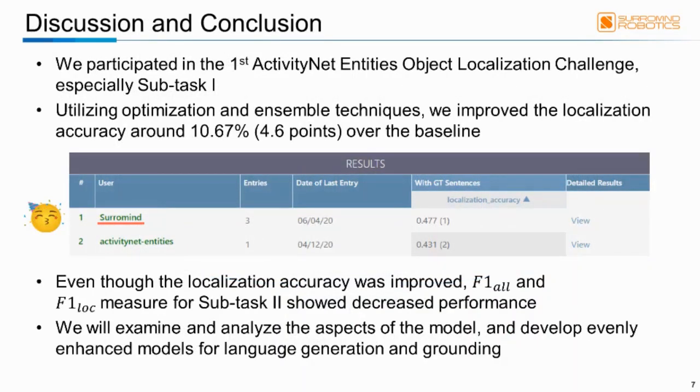In conclusion, with hyperparameter optimization and ensemble techniques, we improved the localization accuracy around 10.67%, from 43.1% to 47.7% over the baseline. We are pleased that our team is announced as the winner of ActivityNet Entities Object Localization Challenge, subtask 1. One notable point is that although the localization accuracy was improved, F1-ALL and F1-Lock measures for subtask 2 were observed to decrease. So as future works, we will examine and analyze the aspects of the model and develop an evenly enhanced model for language generation and grounding. Thank you for listening.